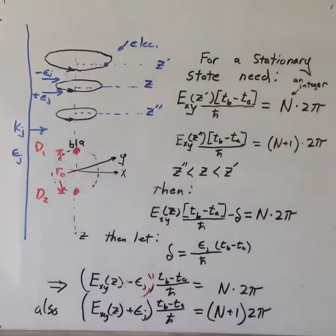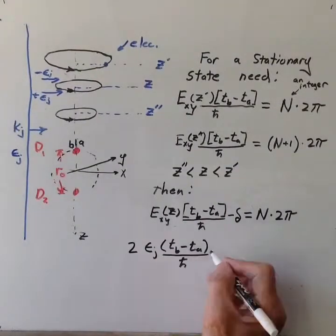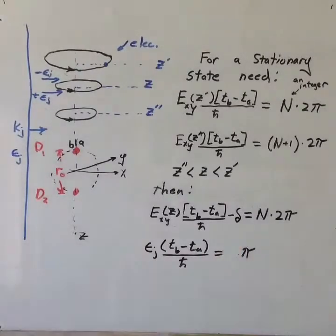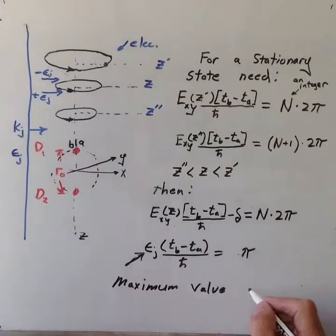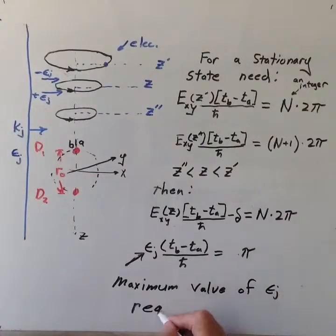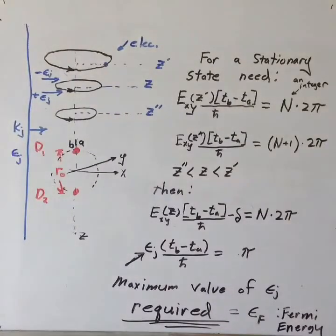We see from these two equations that 2 times the phase factor of the energy, e sub j, at the maximum value of e sub j will equal 2 pi. The maximum value of e sub j is, of course, the Fermi energy. So, the phase factor of the Fermi energy must be at least pi.